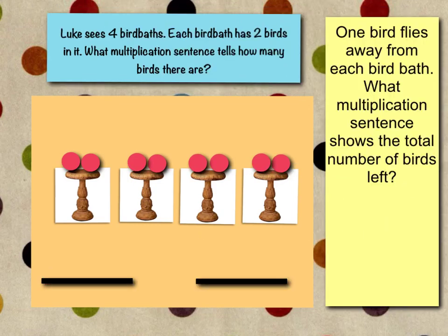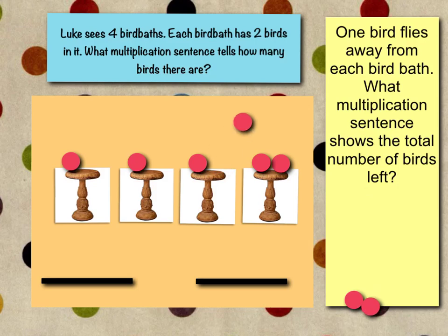Now let's change the problem up a little bit. We've still got the same problem — Luke sees four bird baths, each bird bath has two birds — and this is the picture we drew last time. But one bird flies away from each bird bath. What multiplication sentence shows the total number of birds left? So first we need to take one bird away from each bird bath, just one from each bird bath. Now I have one bird left in each bird bath.